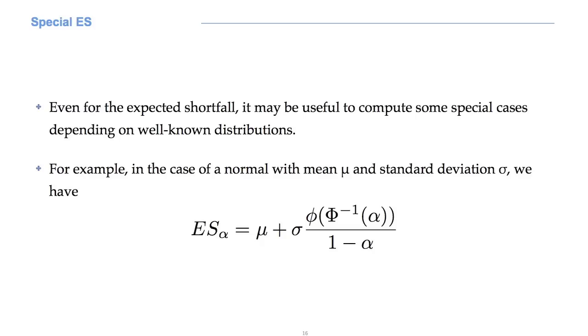As you can imagine, even for the expected shortfall, we can obtain special closed formulas, depending on the theoretical loss distribution we assume. This is what we get for a Gaussian distribution.